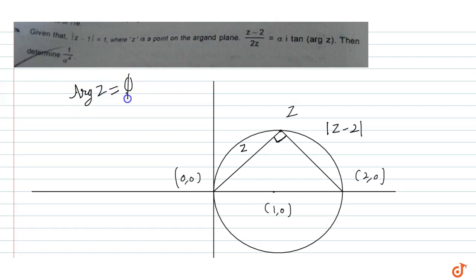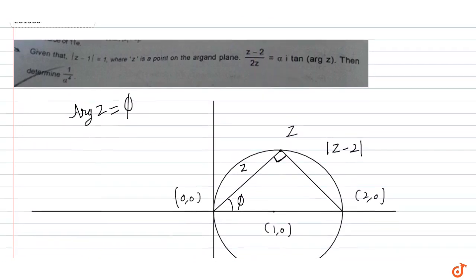So now if we want to understand, z minus 2 upon z. So if I take the modulus of both sides, modulus of z minus 2 upon z, what do we want to do?